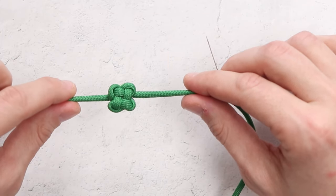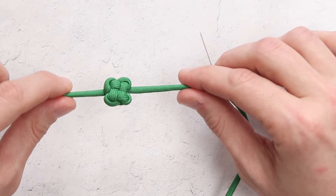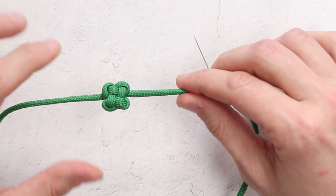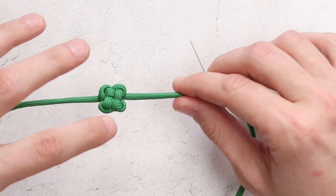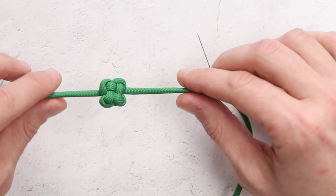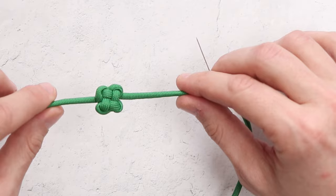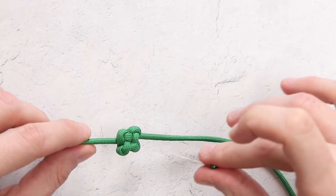So here we do have our completed four-leaf clover knot. I love the way that this knot looks. I think it looks so cool, and it would make a perfect stopper for the end of a keychain or right in the middle of a bracelet, if you want to do it that way. But for our project, we would like to turn it into a lapel pin.